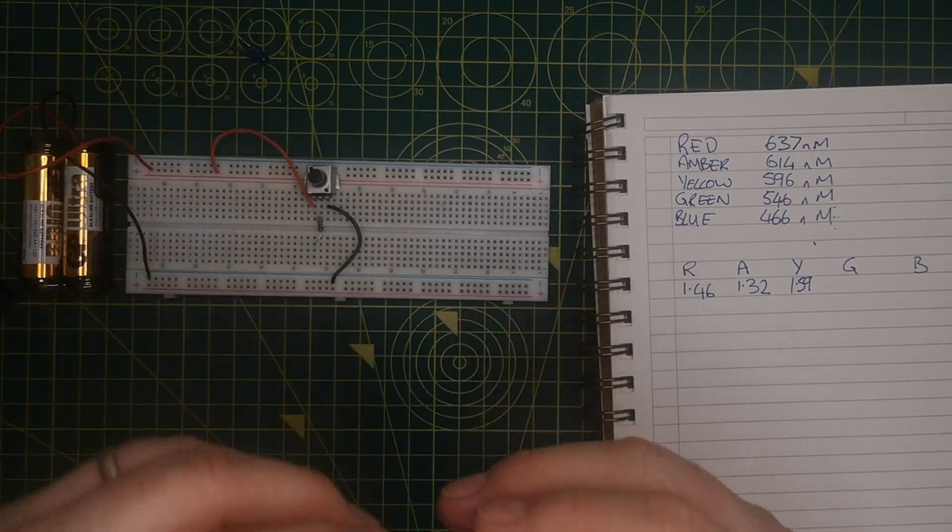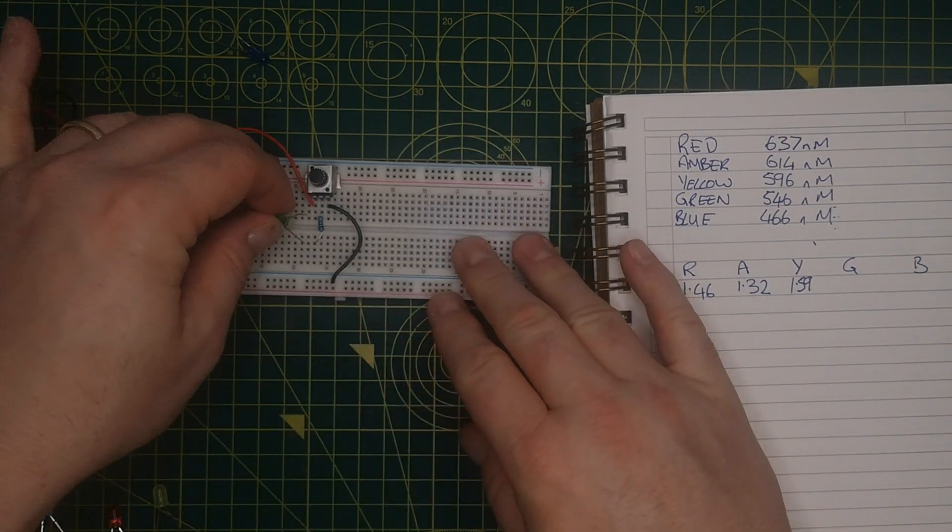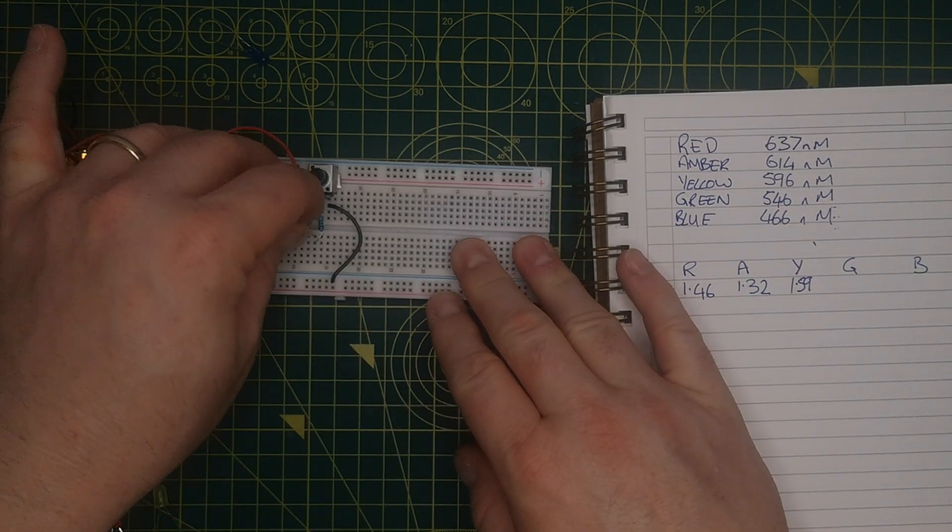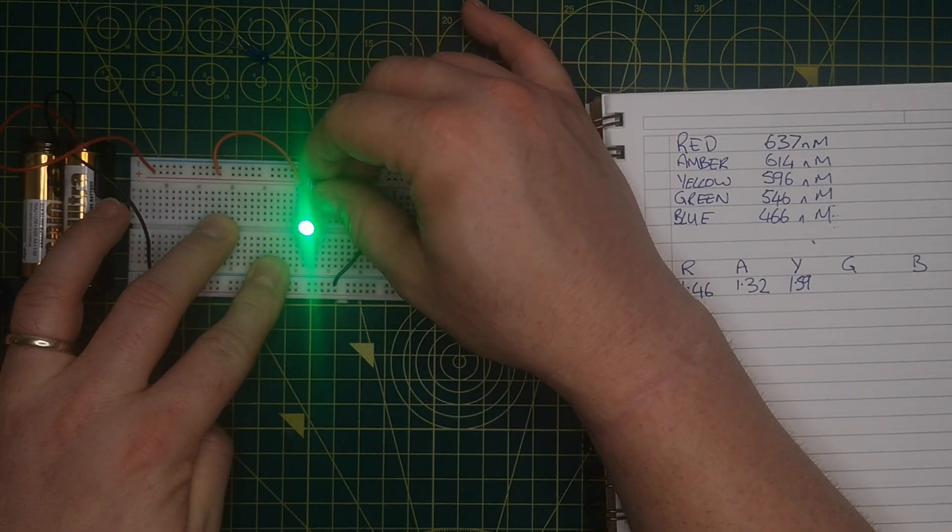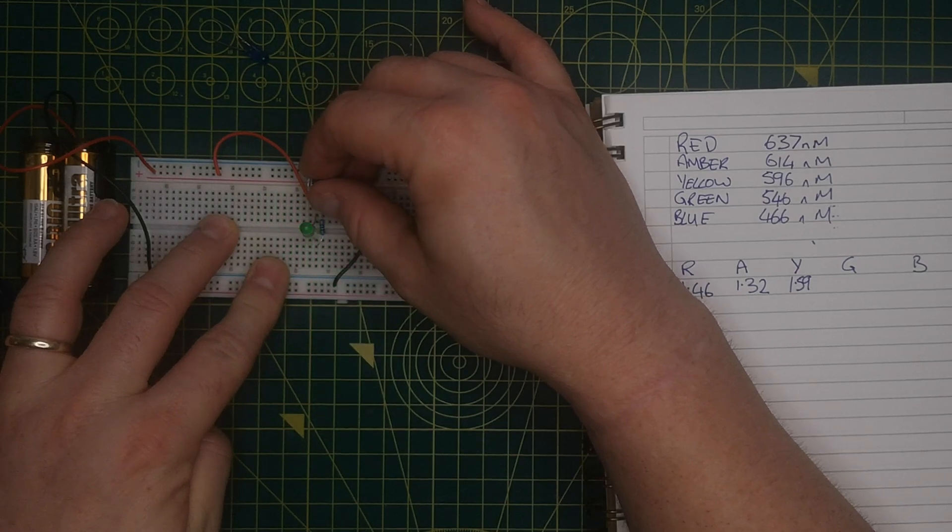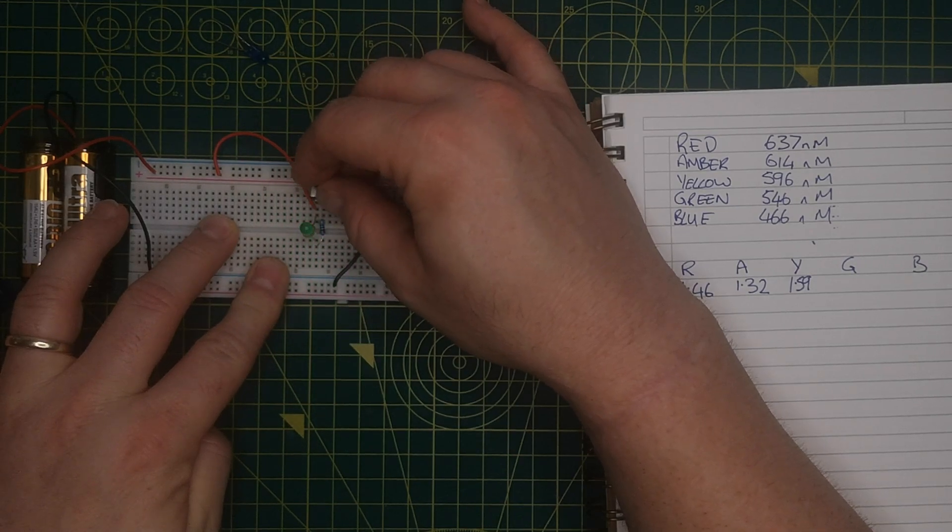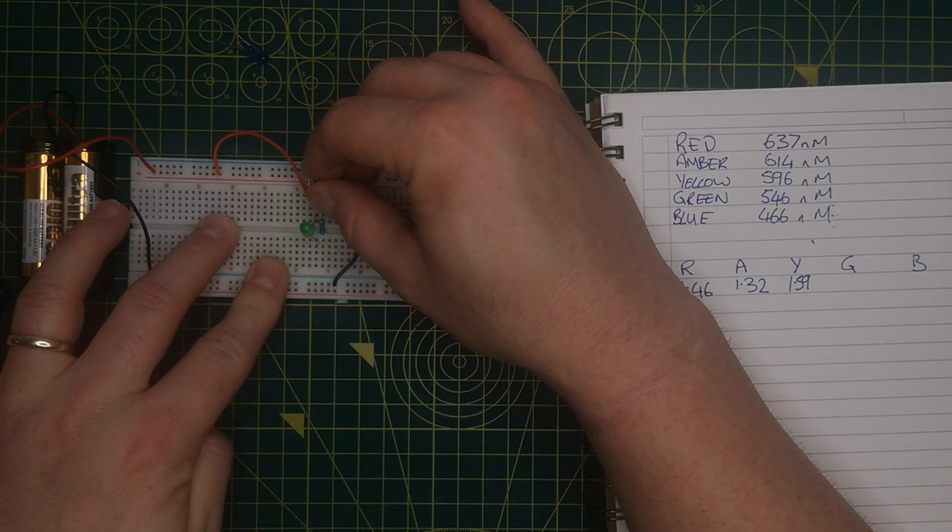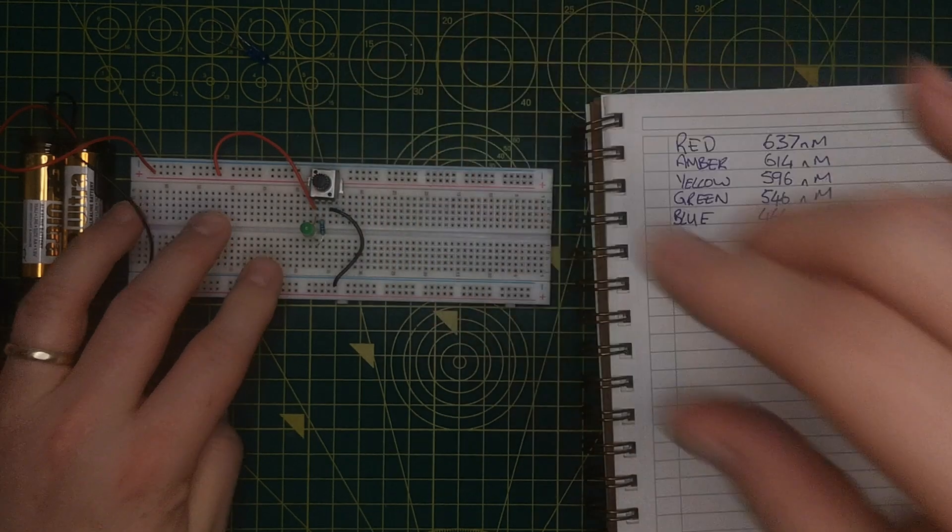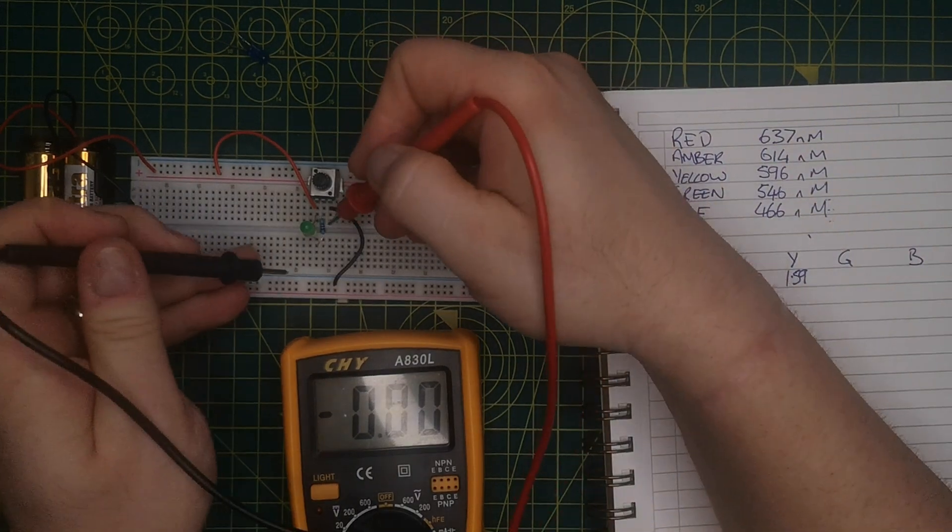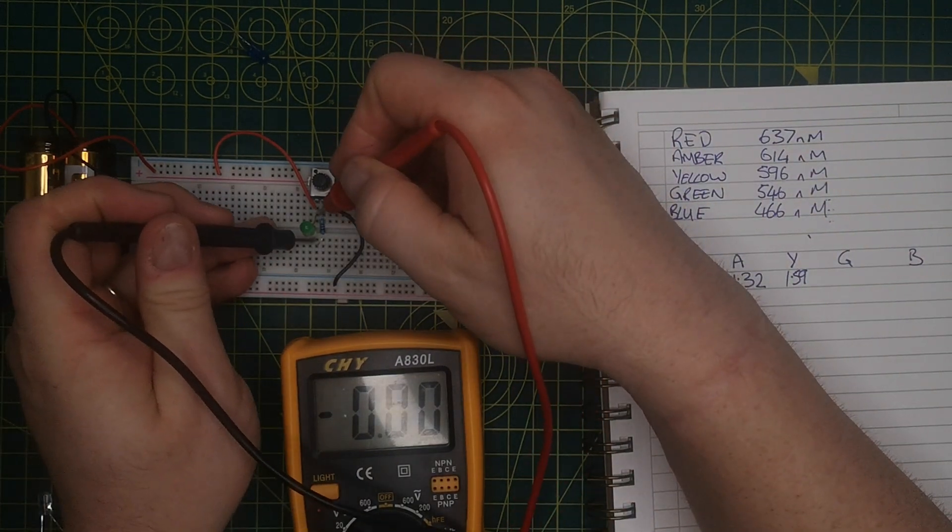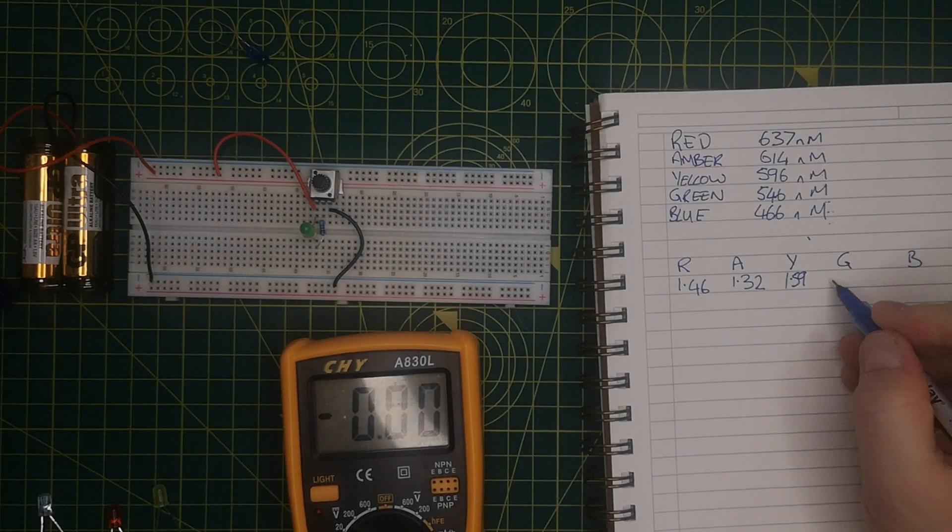Now I'm going to do green. Again, getting the LED in the right orientation. And I'm going to adjust the LED on. We can see the LED's on. I'm going to adjust it until the LED goes out, which is about there. Measure the voltage, and the voltage is 1.83 volts.